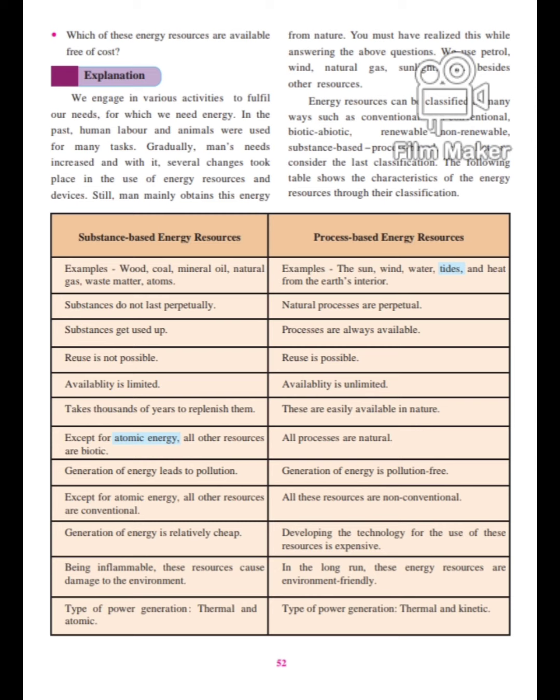Next is process-based energy resources. Examples are: the sun, wind, water, tides, and heat from the earth's interior. Natural processes are perpetual.